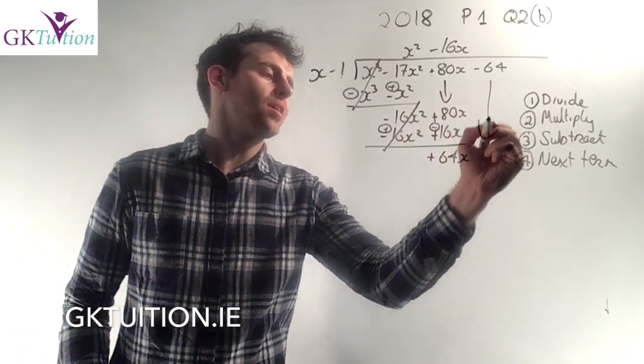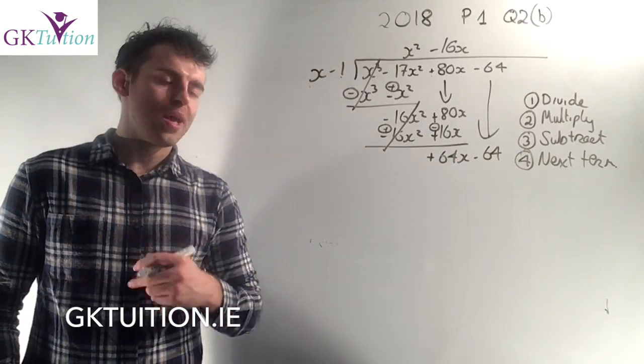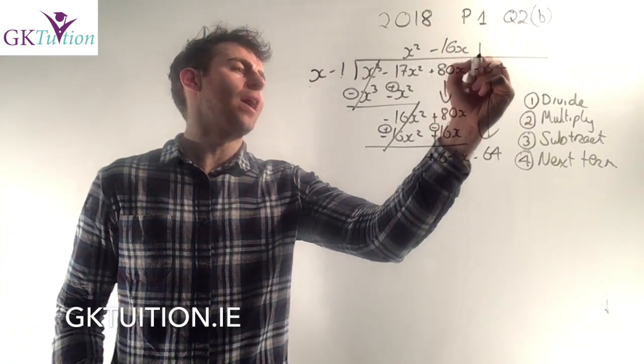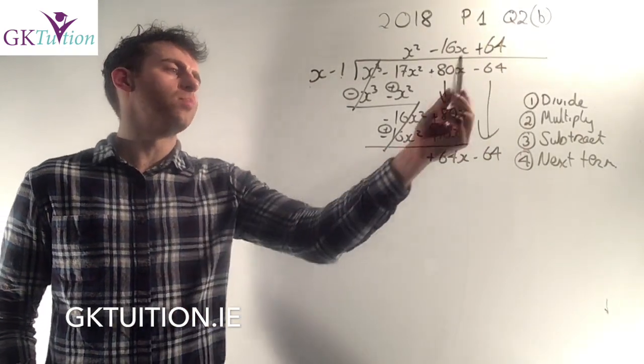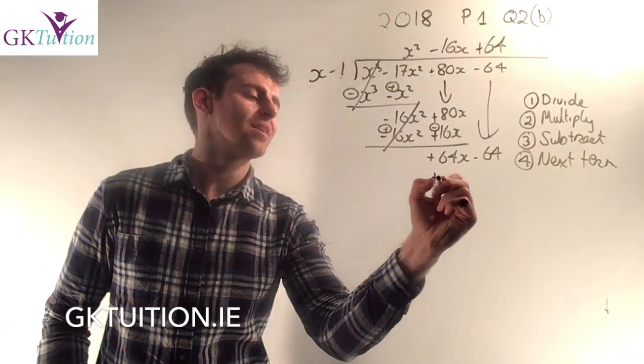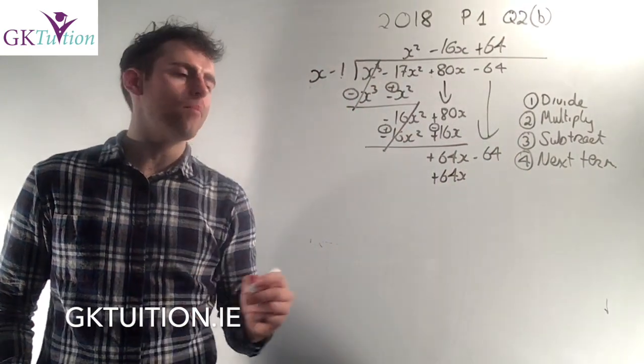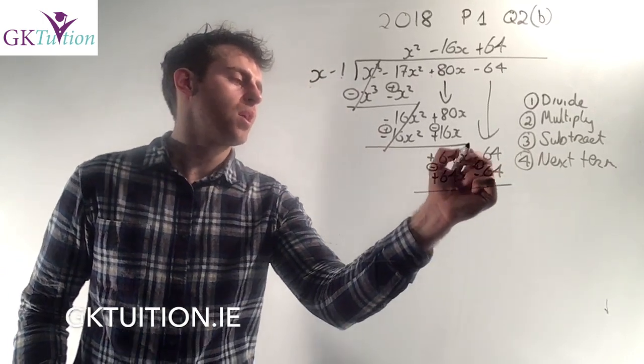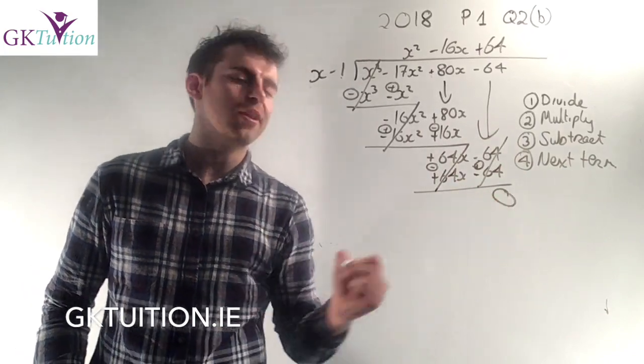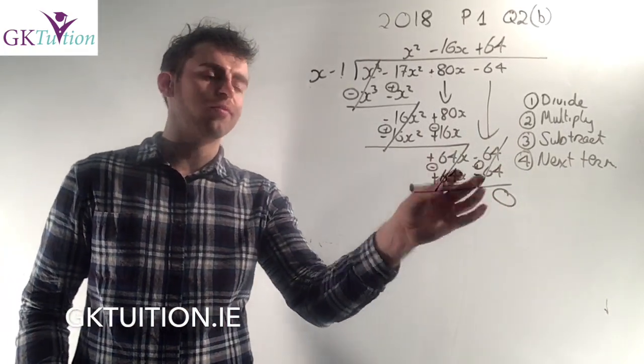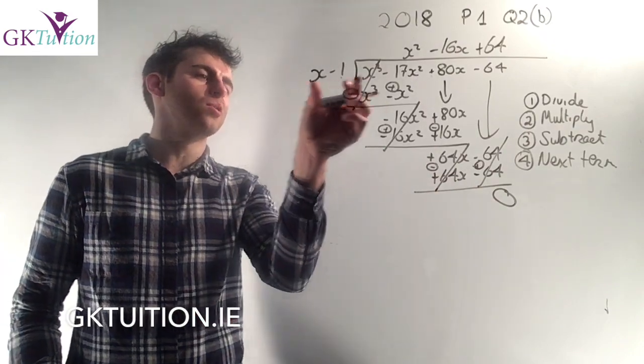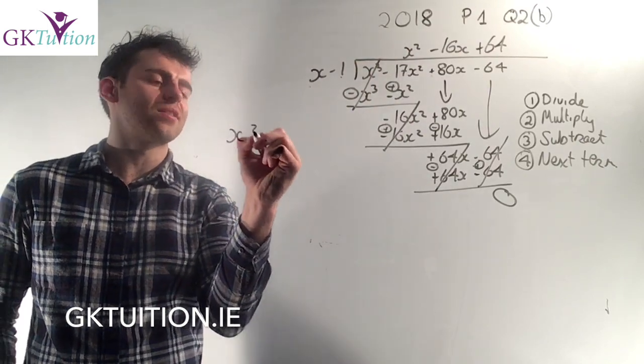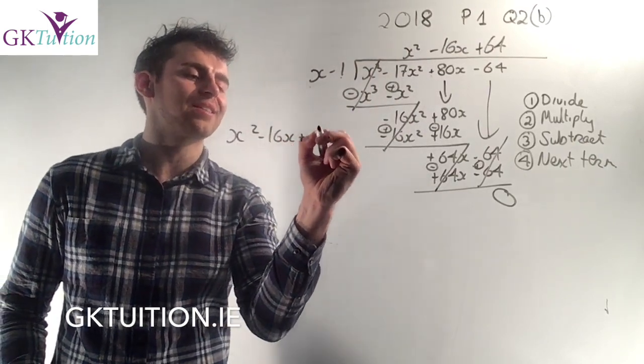And the last thing I'm going to do is take down my next term, which in this case is a minus 64, and just start my process all over again. I'm going to divide x into plus 64 x, goes plus 64 times. I'm going to multiply 64 by x, gives me plus 64 x. 64 by minus 1 gives me minus 64. Change my signs to a minus and to a plus. My x's and my numbers cancel and I'm left with a remainder of 0. If you didn't get a remainder of 0 there, you would have known you've gone wrong, because I know x minus 1 is a factor of that, so my remainder has to be 0.